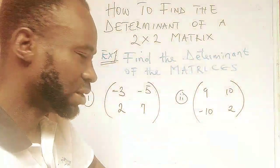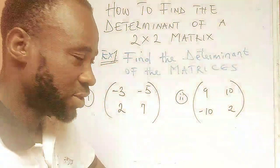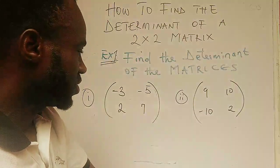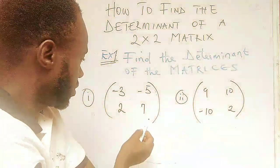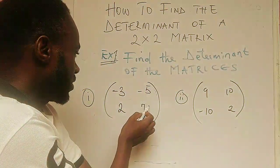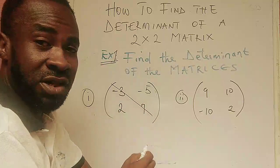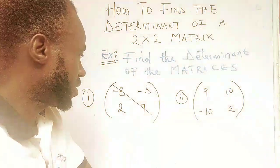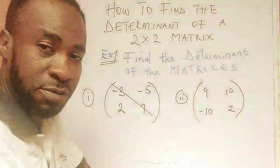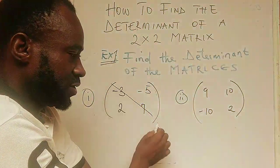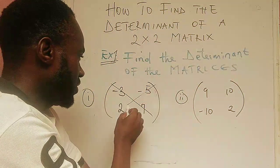How do we find the determinants of a 2x2 matrix? We are going to take the product of this diagonal. Remember that a matrix is a rectangular array of numbers. This is a diagonal, this is a diagonal.